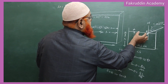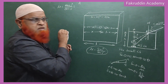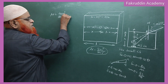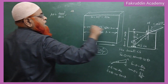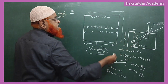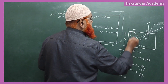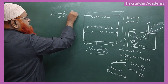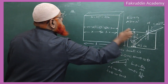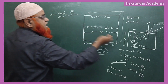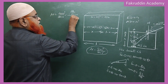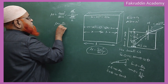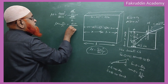So mu equals tan i by tan r. Tan i is the opposite side AB divided by the adjacent side, which we take as h-dash — the apparent depth. Tan r is the opposite side AB divided by the adjacent side h, the real depth. AB cancels, giving mu equals h by h-dash, which is real depth divided by apparent depth.